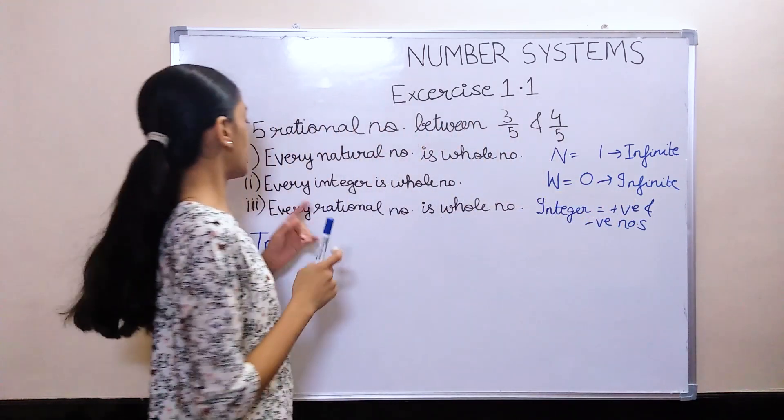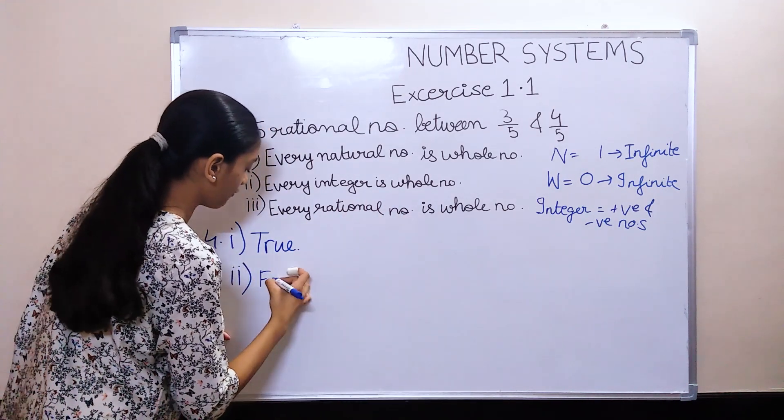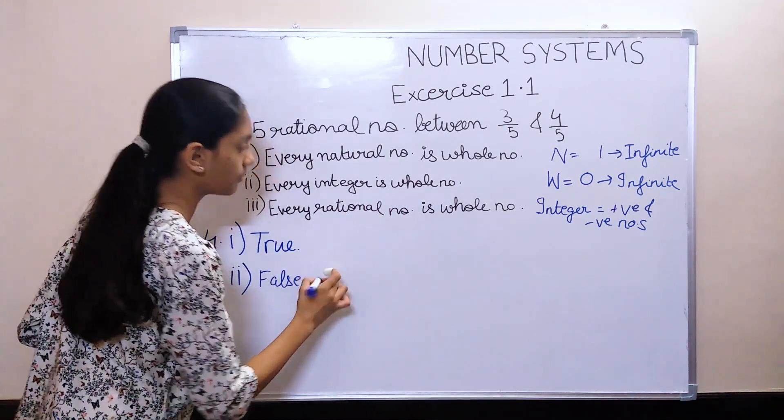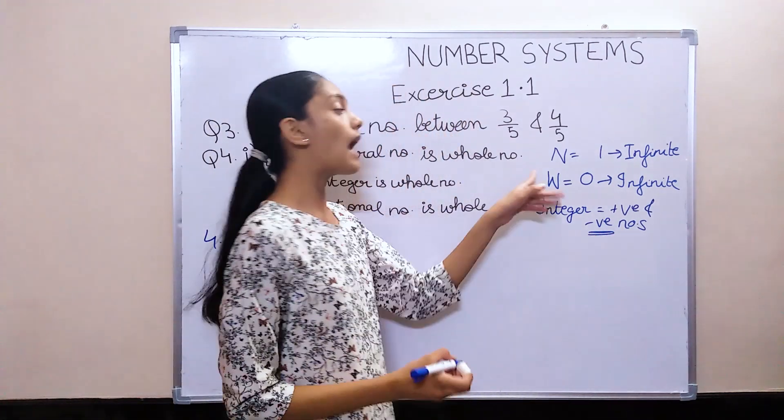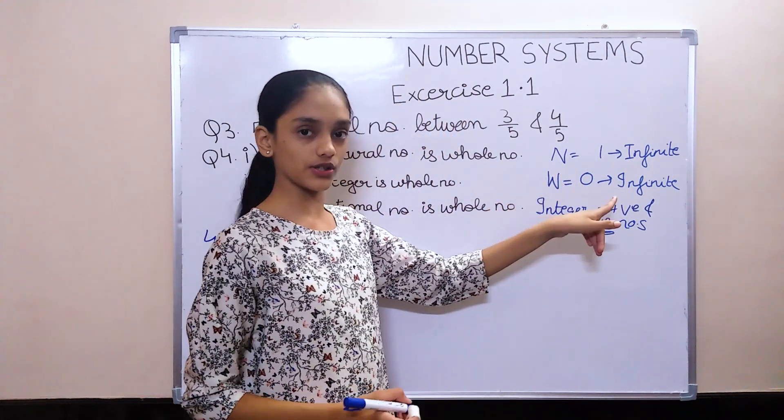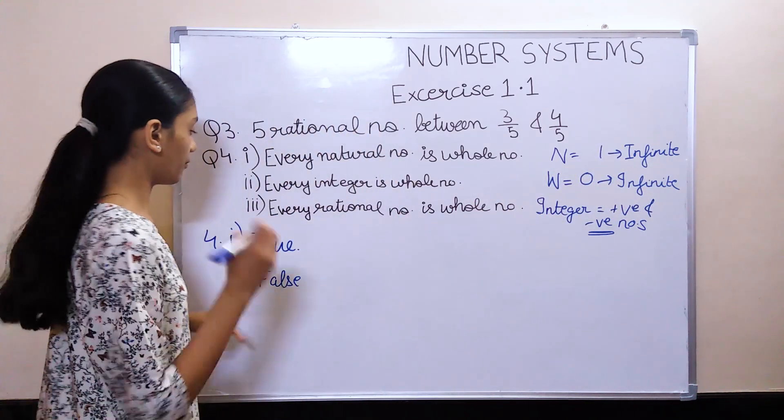The question says, every integer is a whole number. The statement would be false because integers also have negative numbers, and whole numbers are only positive numbers from 0 to infinite. So the statement would be false.